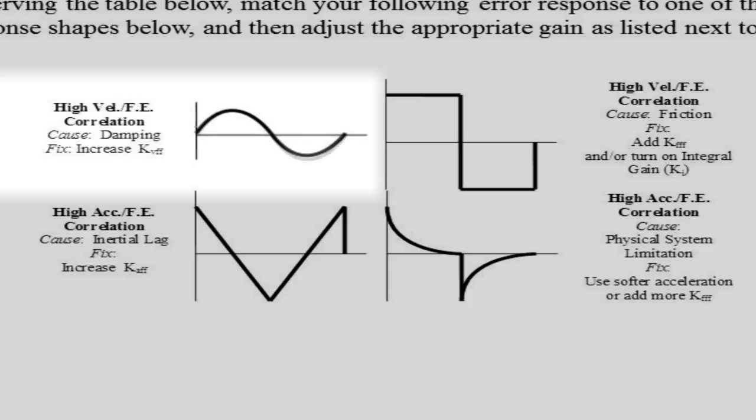As you increase kVFF, the magnitude of both halves of the parabolic shape will get closer to zero. If you increase it too much, the shape will invert and the magnitudes will grow in the opposite direction. You don't want to do this.